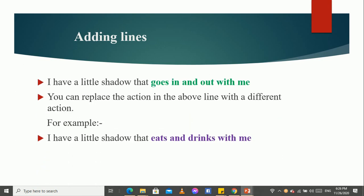So, I have a little shadow that goes, here we can add some of the lines. I have a little shadow that goes in and out with me. You can replace the action in the above line with a different action. So, goes in and out with me is a line. And you can replace it with another line. I have a little shadow that eats and drinks with me. So, in the place of goes in and out with me, we can use it as eats and drinks with me.